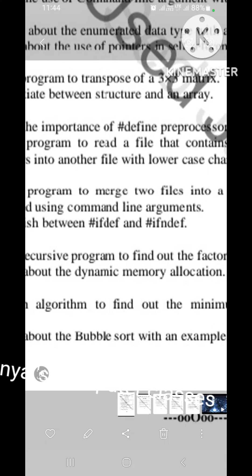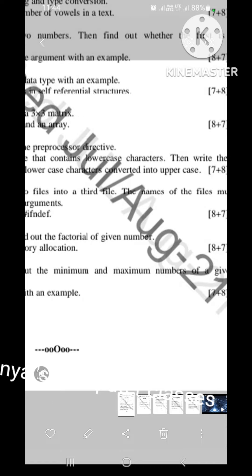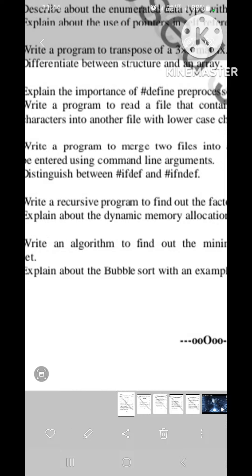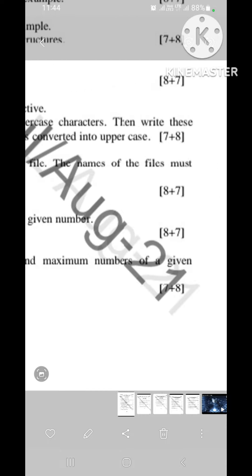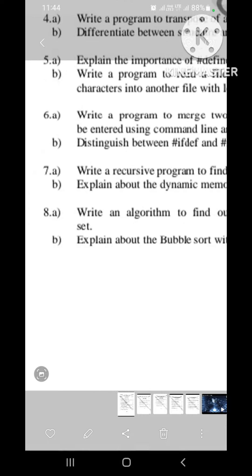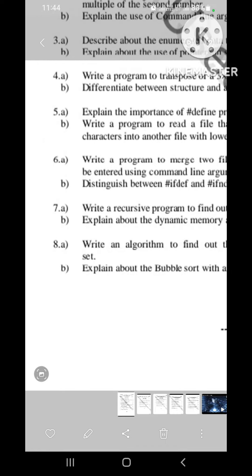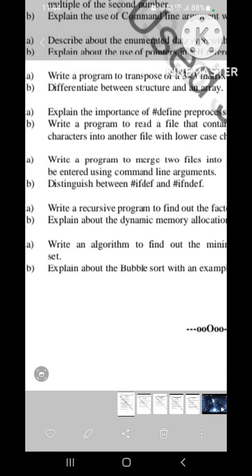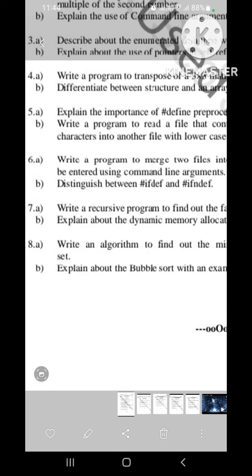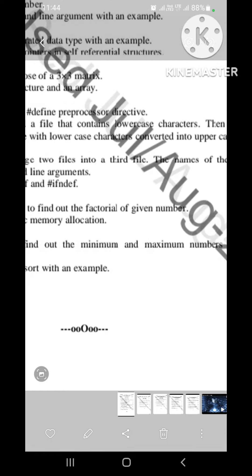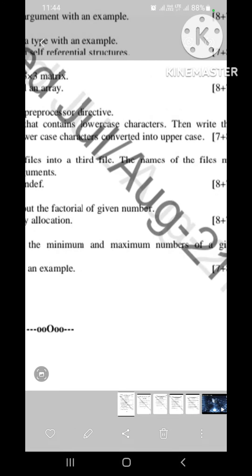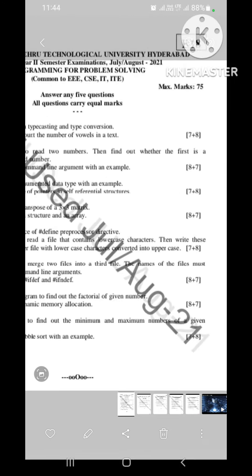Next one is, seventh A. Write a recursive program to find out the factorial of a given number. It is very important program, 8 marks question. And, explain about the dynamic memory allocation, 7 marks question. Eighth, write an algorithm to find out the minimum and maximum numbers of a given list, given set. That is for algorithm, 7 marks question. And, last one is, explain about the bubble sort with an example, 8 marks question.